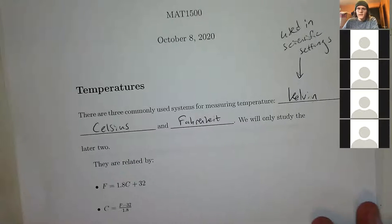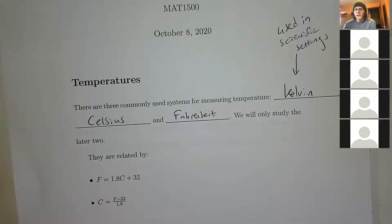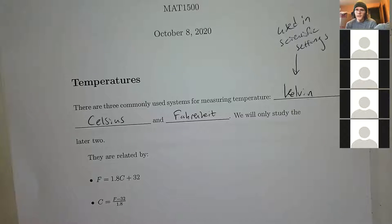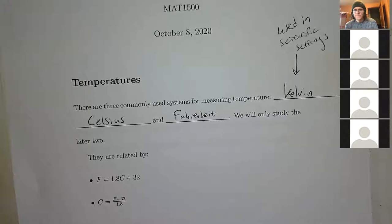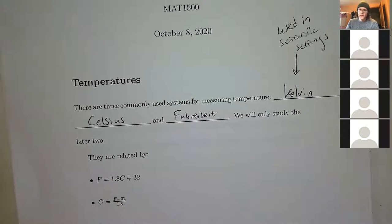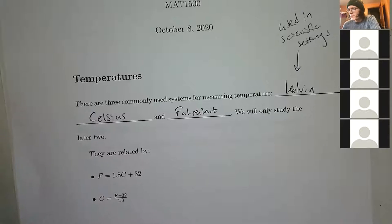Student: 'Isn't Kelvin used for really hot situations, like ovens?' Zero Kelvin is absolute zero — the complete lack of atomic movement, everything at a standstill. I don't think you can even reach absolute zero. You can also convert to Kelvin just as easily as Celsius or Fahrenheit, but we just aren't going to do it because you'll probably never need it.